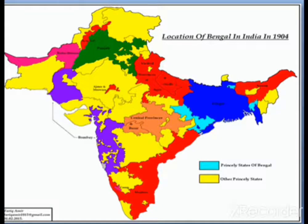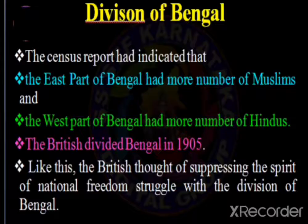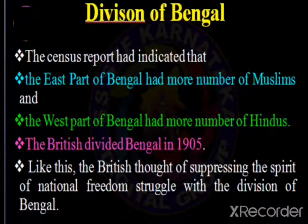In the map you can see the location of Bengal in India during 1904. This is the clear map of Bengal — on one side eastern Bengal and on the other side western Bengal. As per the census, the east part of Bengal had more number of Muslims and the west part of Bengal had more number of Hindus.